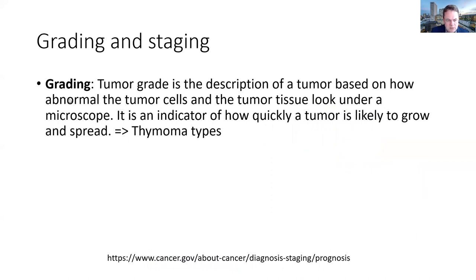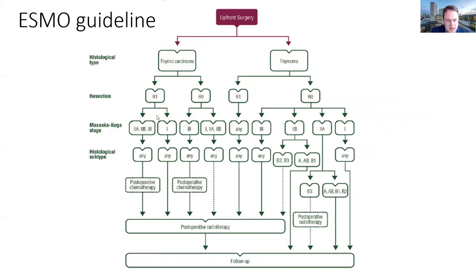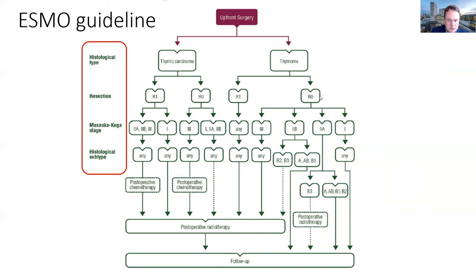It is important to understand what grading and staging mean. Grading is a description of a tumor based on how abnormal its cells and tissue appear under the microscope — an indicator of how quickly the tumor is likely to grow and spread. This is used in classifying thymoma subtypes and carcinomas of the thymus. Staging refers to the extent of your cancer: how large the tumor is and whether it has spread into other organs. The combination of subtype and staging parameters — such as Masaoka-Koga staging or TNM classification — determines whether patients need post-operative radiotherapy or can proceed to follow-up after surgery, particularly if the tumor has been completely removed.